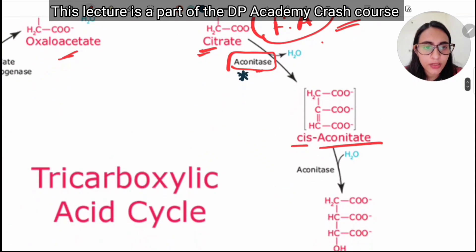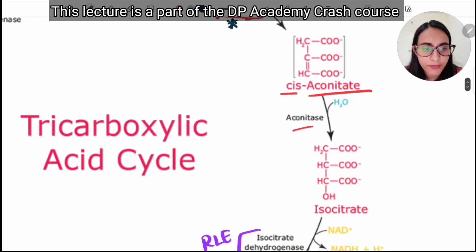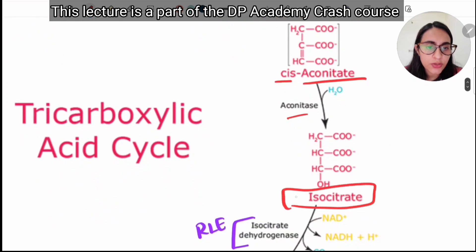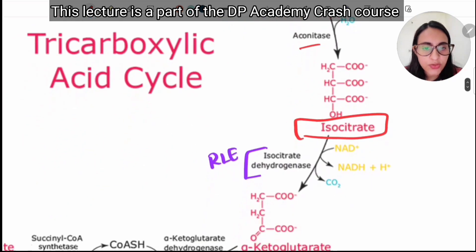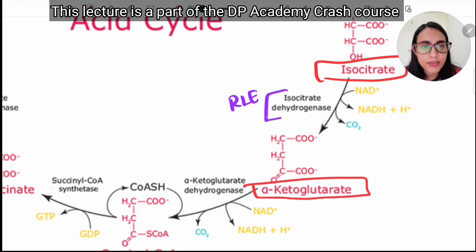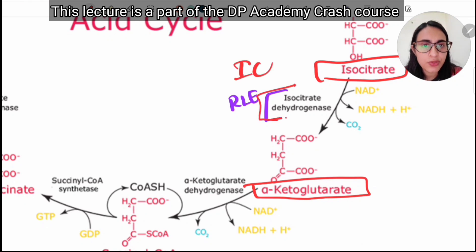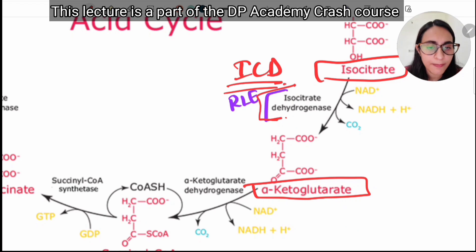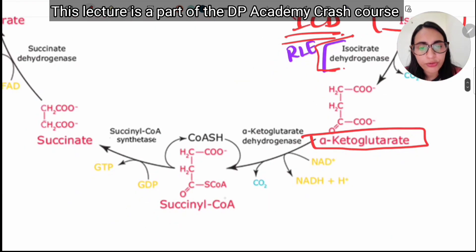Aconitase converts citrate to isocitrate, and then isocitrate is converted to alpha-ketoglutarate. This conversion is the rate-limiting step of the TCA cycle, and the rate-limiting enzyme is isocitrate dehydrogenase.